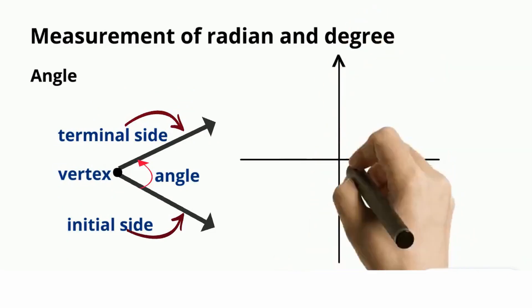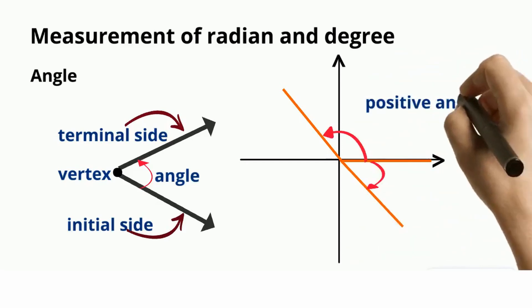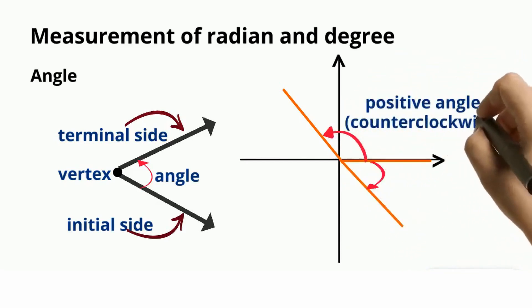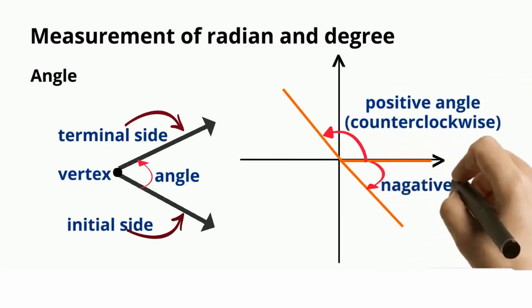The endpoint of the ray is the vertex of the angle. Next we are going to see positive and negative angles. A ray rotating from the x-axis counter-clockwise gives a positive angle. A ray rotating from the x-axis clockwise gives a negative angle.